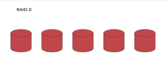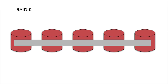RAID Zero combines multiple disks together into a single logical drive. RAID Zero is also called a stripe set or a striped volume. Data is written by striping across all the disks in the RAID set. RAID Zero provides two benefits: it increases performance, and it has the ability to create large logical volumes out of many smaller disks. However, RAID Zero does not provide any type of data redundancy, and thus a failure of one disk can make entire stripes of data unreadable.